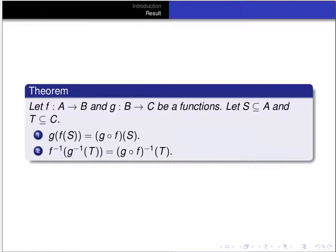The theorem we want to prove is the following. Let f be a function from A to B and g be a function from B to C. Let S be a subset of A and T be a subset of C. The first statement is that the image under g of f of S is equal to the image of S under g composed with f. The second statement is that the pre-image under f of the pre-image under g of T equals the pre-image of T under g composed with f.